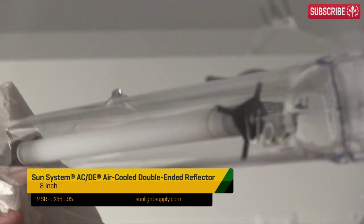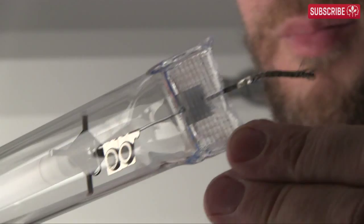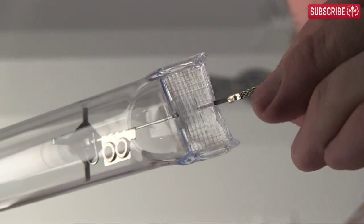Now this reflector is designed specifically to run a double-ended 1000 watt HPS lamp, the most intense grow light on the market. It's also the most efficient in terms of PAR output per watt.